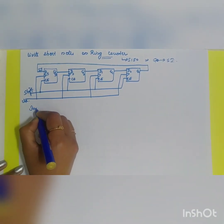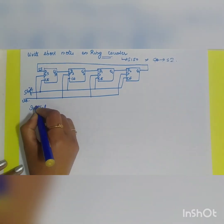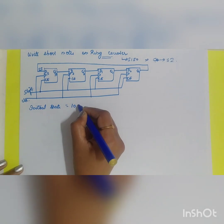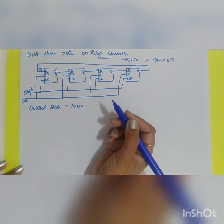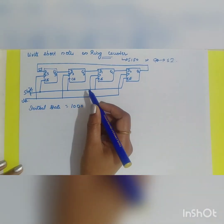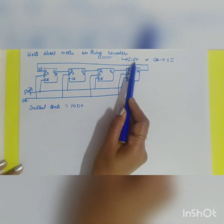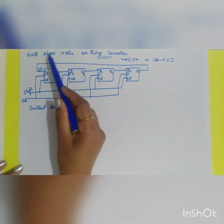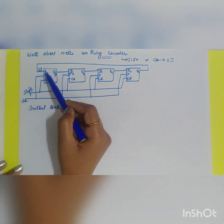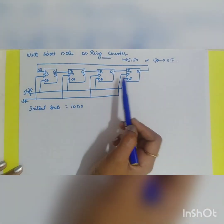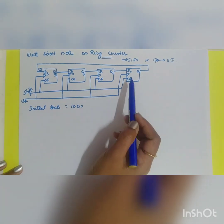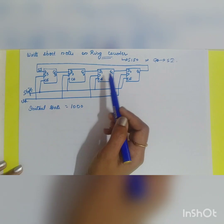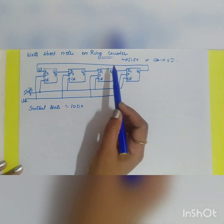Let us take an example. Assume that the initial state of the flip-flops is equal to 1 0 0 0. Now, since Q0 is connected back to the input, the 0 at Q0 will go back as input to D3. The data will be circulated, and after the fourth clock pulse you will get the initial data back.